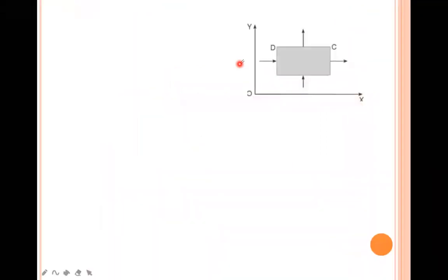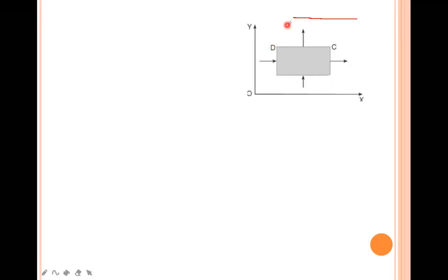Generally, in the case of a one-dimensional heat equation, the heat flows along a line. In the case of a two-dimensional heat equation, if the heat flows along curves between parallel lines, then the heat flow is called two-dimensional heat flow. This is the general form of the two-dimensional heat equation. In the case of steady state: ∂²u/∂x² + ∂²u/∂y² = 0.